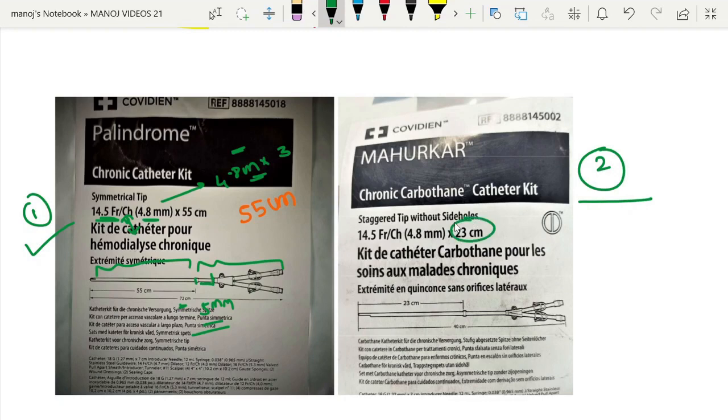Second is the 23 cm perm cath. This belongs to the Covidone company. Again it is 14.5 French. Here the tip to cuff is 23 cm. Here again it is 17 cm. So the total length is 40 cm, 23 plus 17 cm.